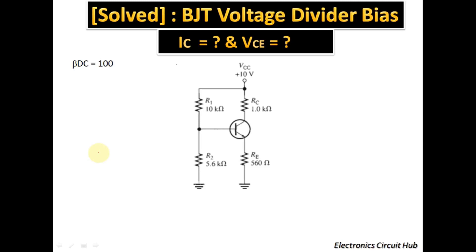Hello friends, welcome to Electronic Circuit Hub. Today we are going to solve one more numerical based on BJT — specifically, BJT voltage divider bias. We have to find the value of IC and the value of VCE. This BJT is biased using voltage divider biasing.